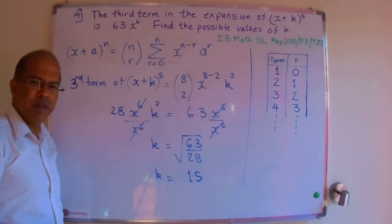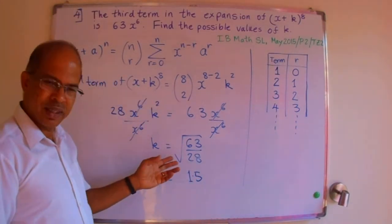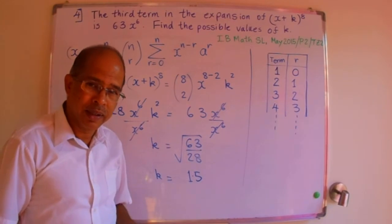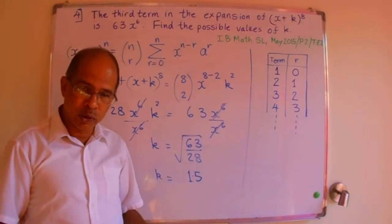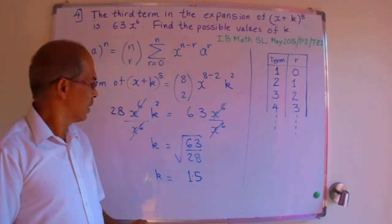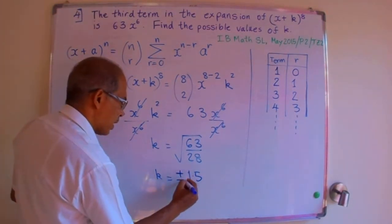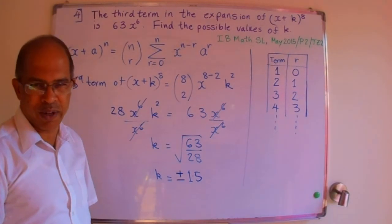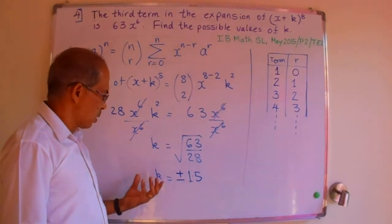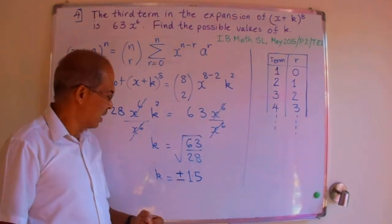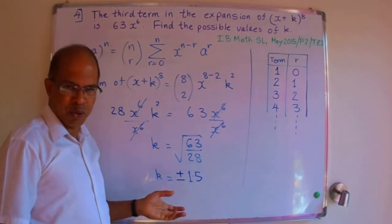But do remember that whenever you have a root that is an even number, like the square root, or the fourth root, or the sixth root, and so on, then both plus 1.5 could be the answer, as also minus 1.5. So in this case, the possible values of k are plus or minus 1.5.